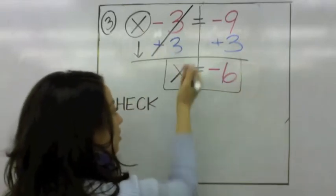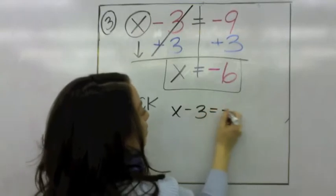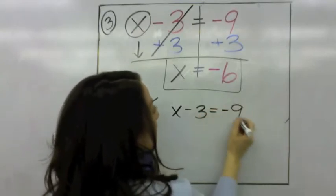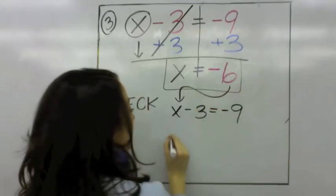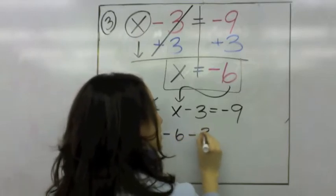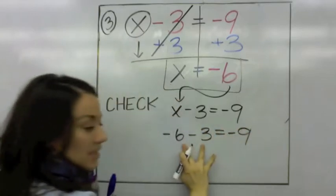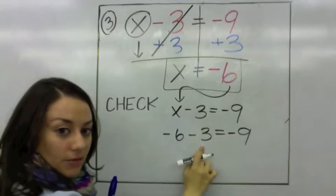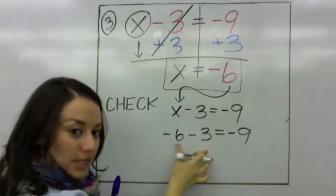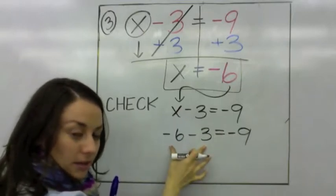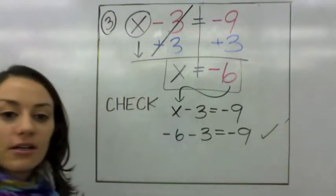Let's check our answer. The equation was x minus 3 equals negative 9. Substitute negative 6 in the place of x: is negative 6 minus 3 equal to negative 9? Negative 6 and negative 3 are the same signs, so add 6 plus 3 and keep the sign. That is correct — it is negative 9.